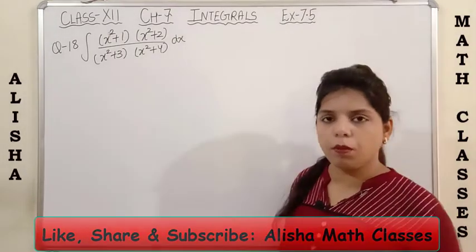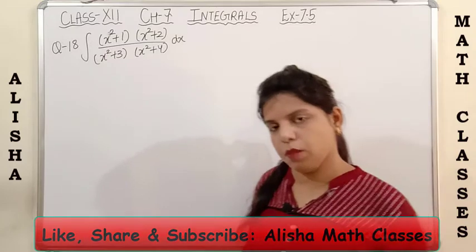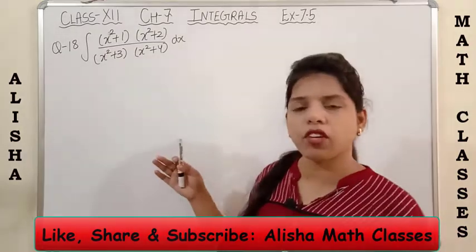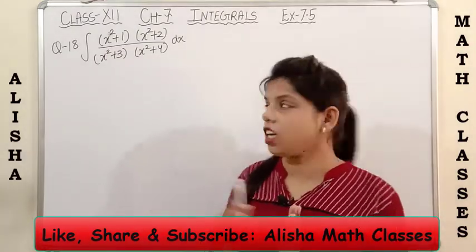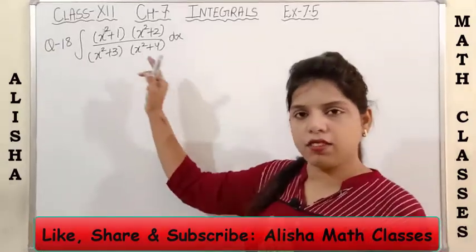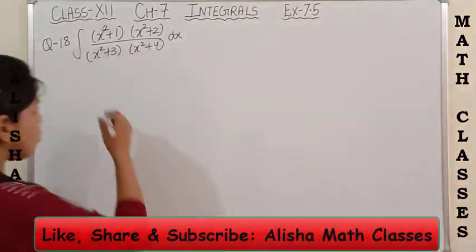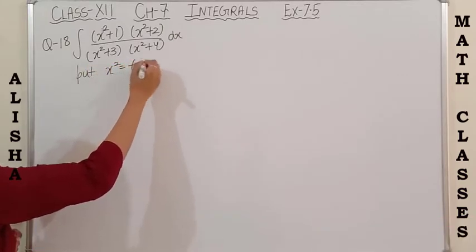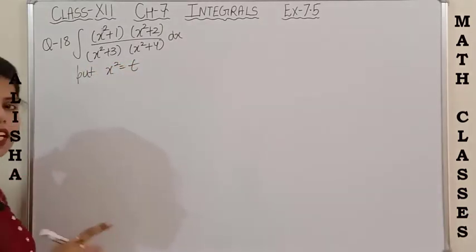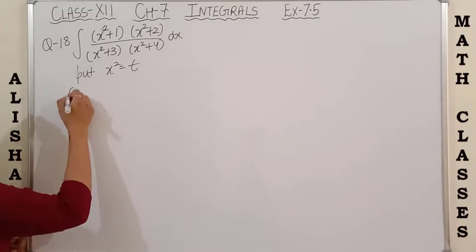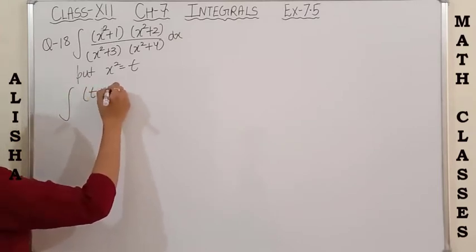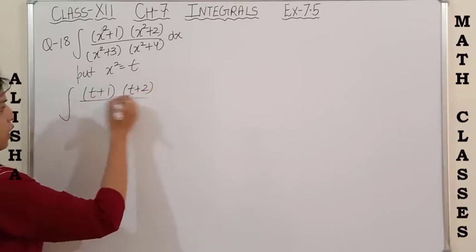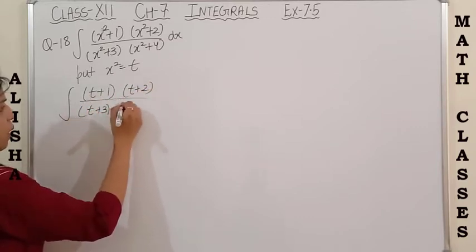Question number 18 is the integration of (x²+1)(x²+2) upon (x²+3)(x²+4). One thing we can see here is that we have the term x² in each term in the numerator as well as the denominator. So for convenience, I am going to replace x² with a new variable t. I am NOT taking the differentiation — I am just replacing x² by t. So it will become (t+1)(t+2) upon (t+3)(t+4).